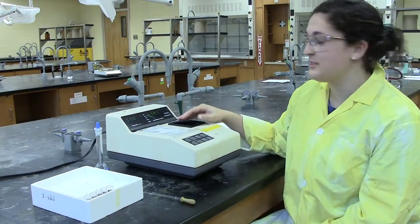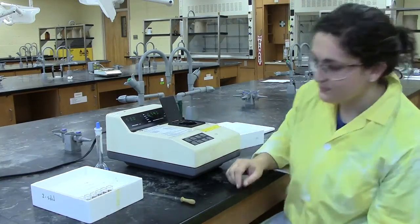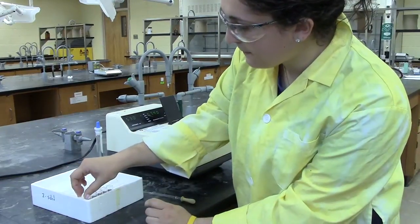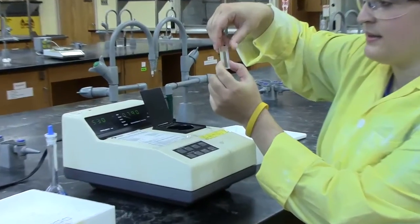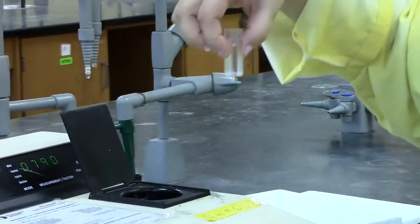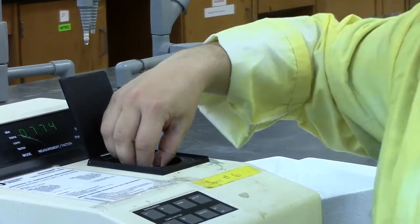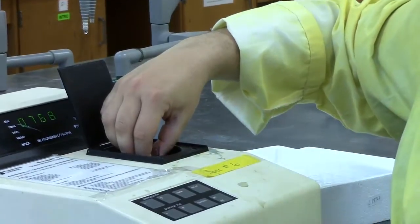We're now going to set our reference by using our blank or solvent. You want to hold these cuvettes on the blurred side. You then can put the cuvette into this hole with the arrow pointing through the blank side.